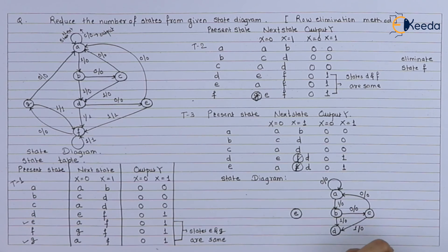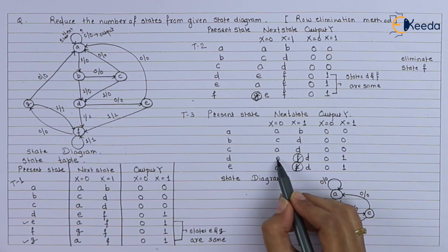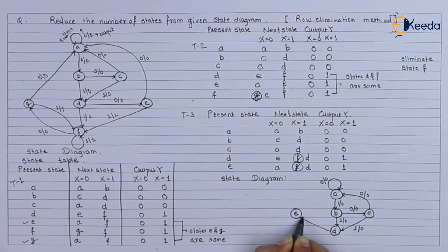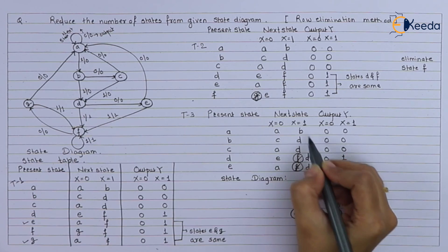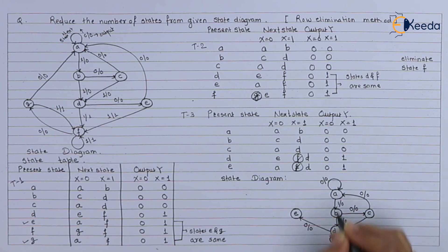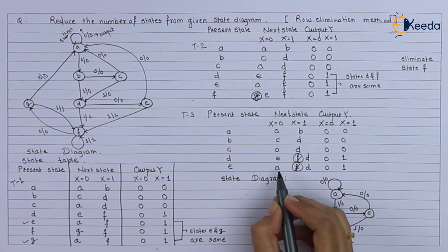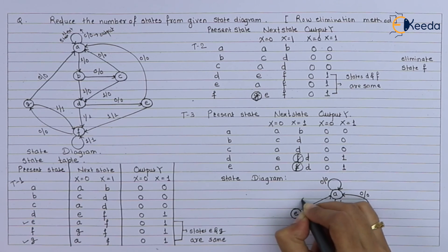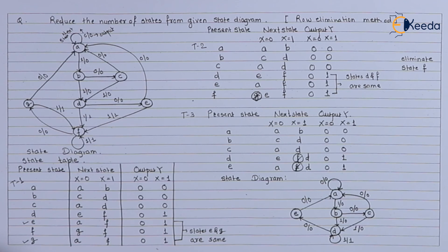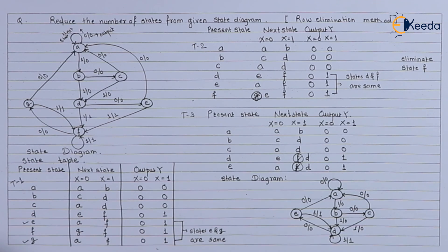For state D, when x equals 0 the next state is E and output is 0; when x equals 1 the next state is D and output is 1, written as 1/1. For state E, when x equals 0 the next state is A and output is 0; when x equals 1 the next state is D and output is 1, written as 1/1.